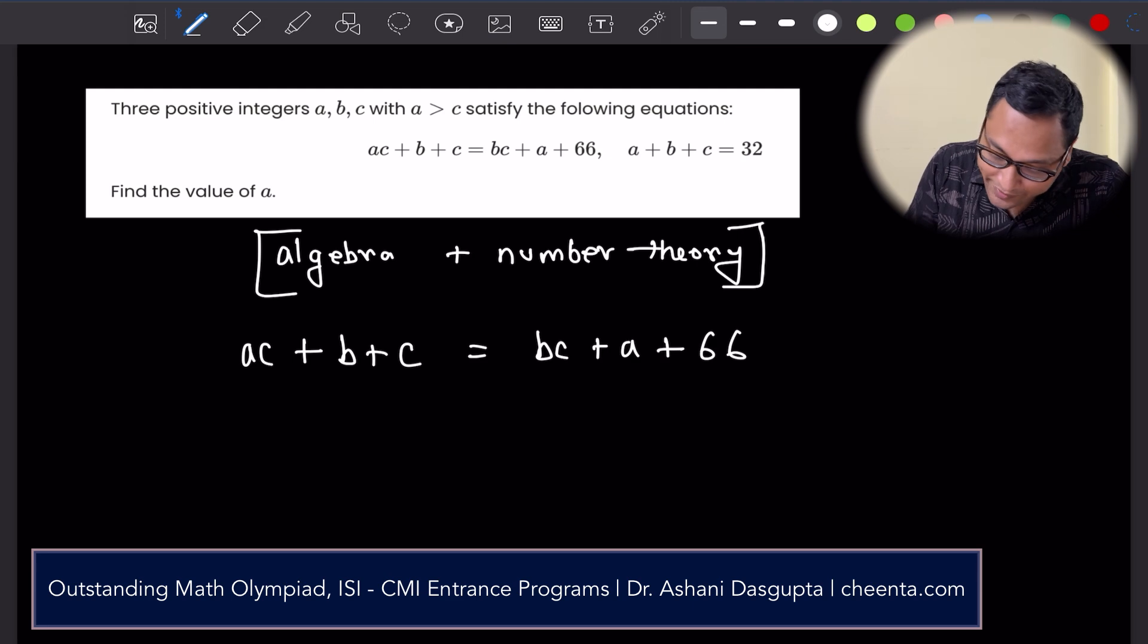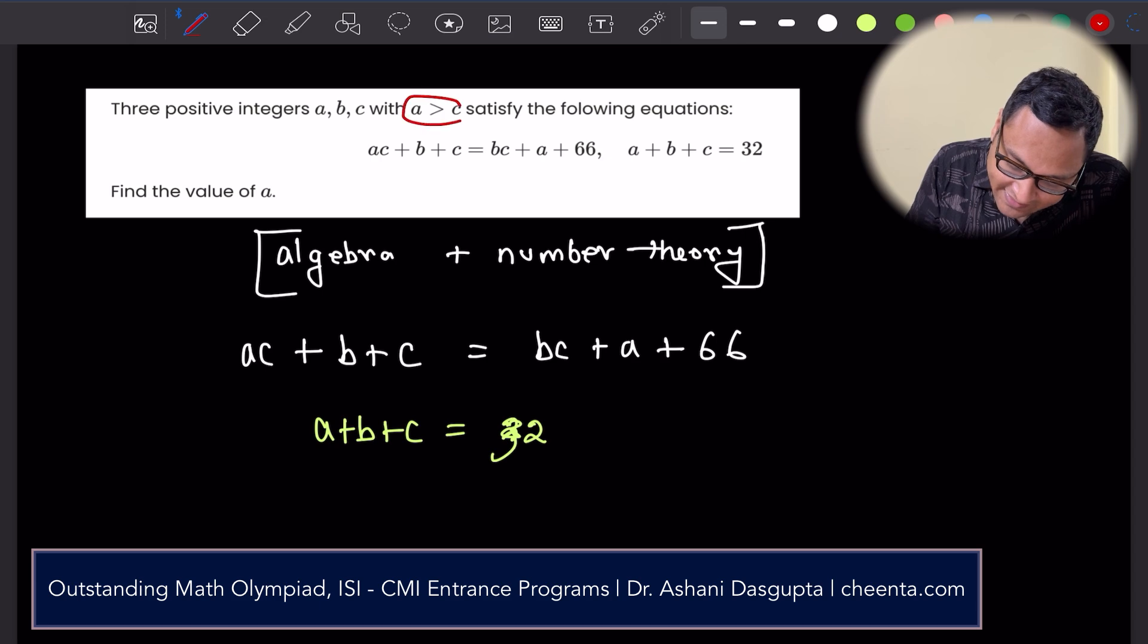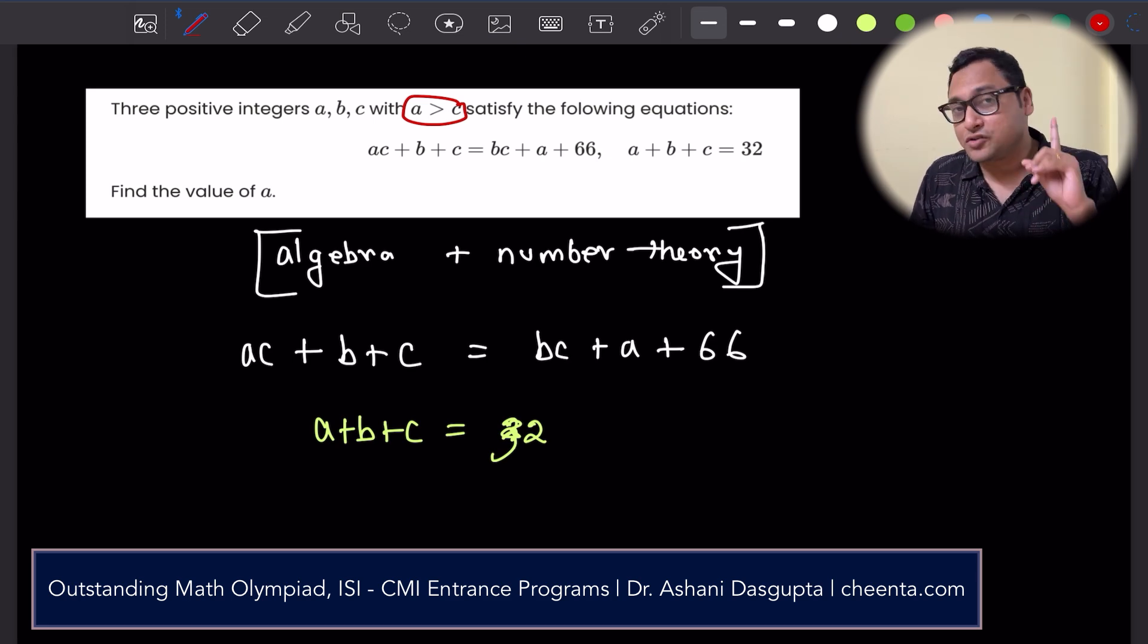And the second equation is a + b + c is equal to 32. Now there is an additional condition that a is greater than c.